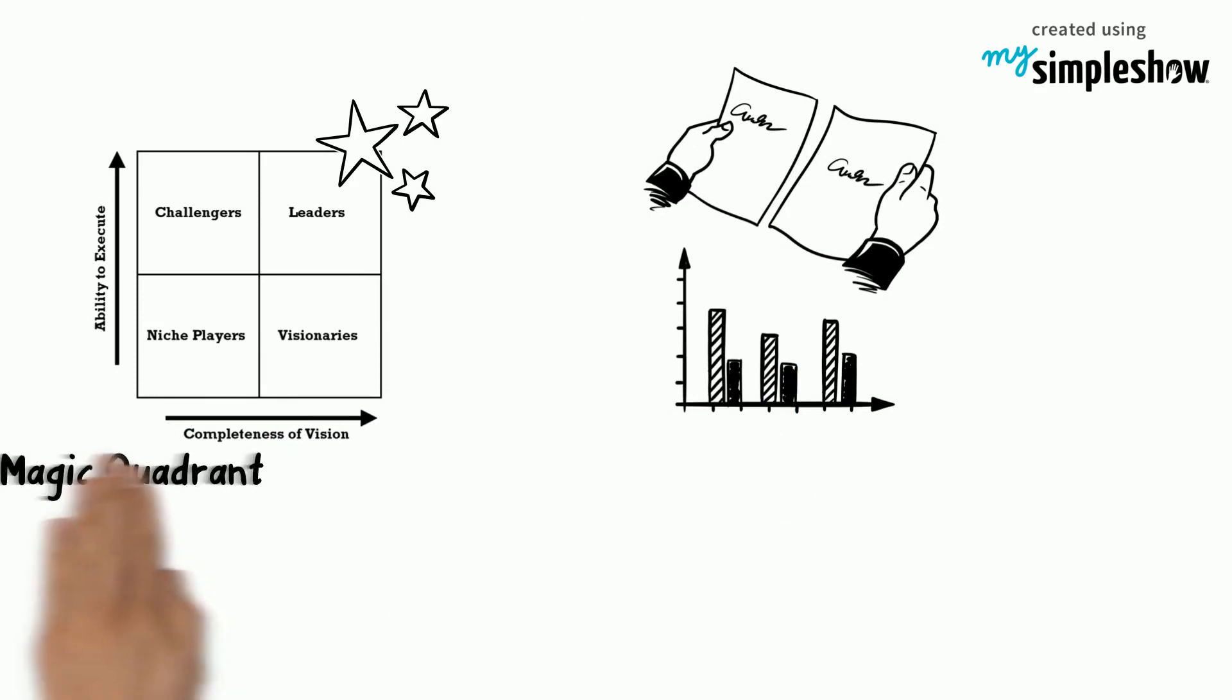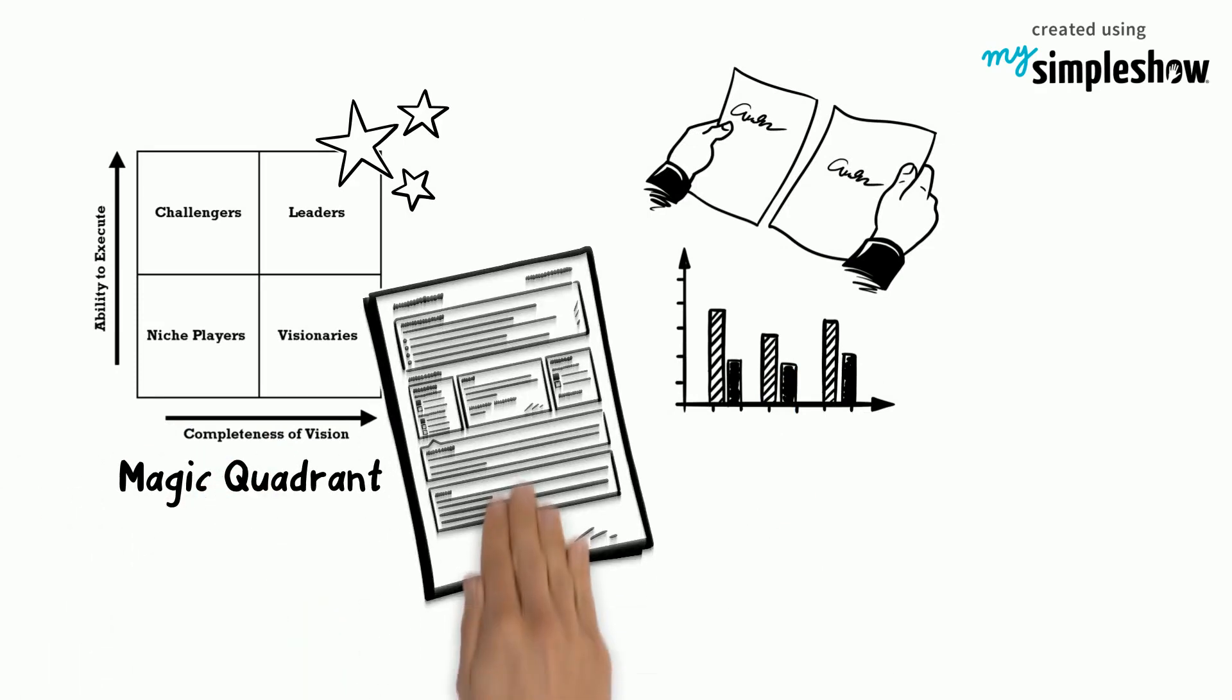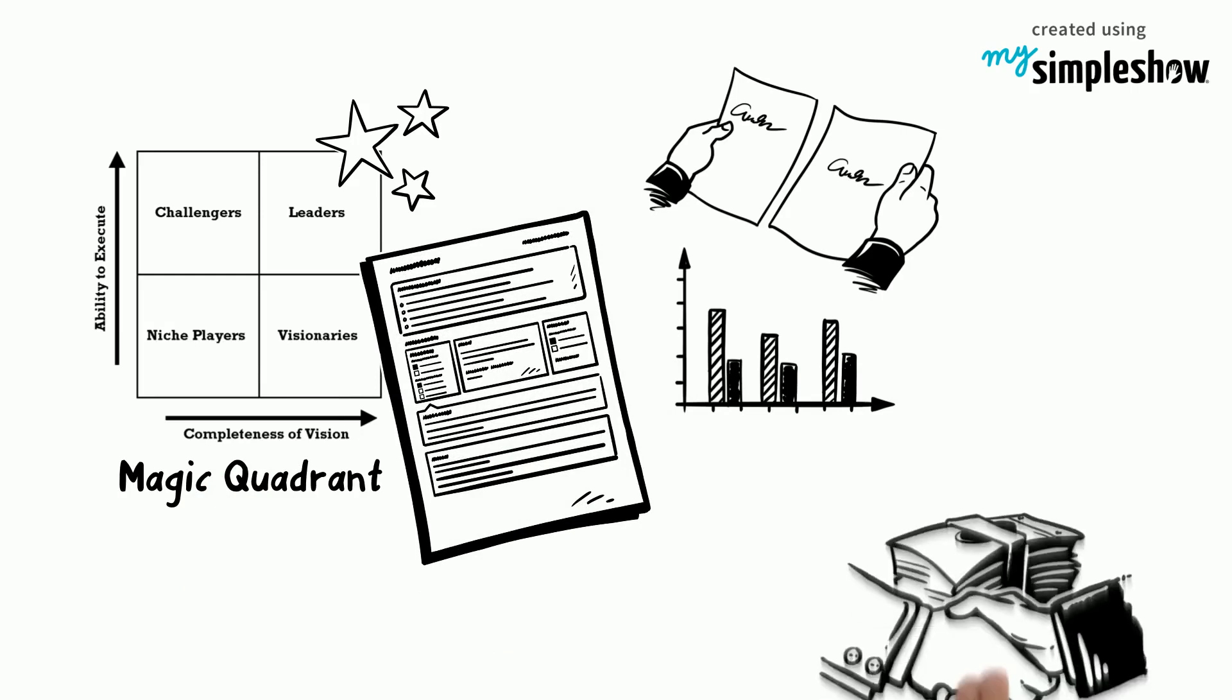A thorough comparison of competitors, using the magic quadrant and report, may ultimately help a business to gain the upper hand.